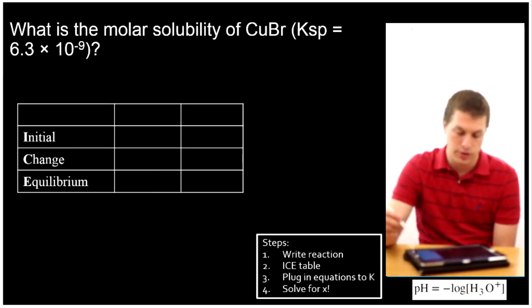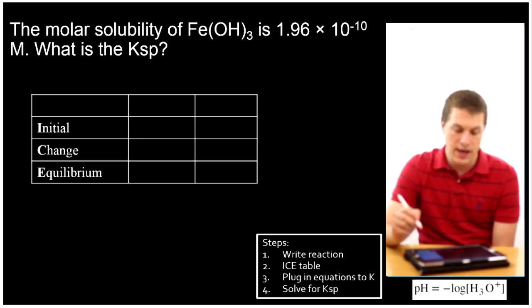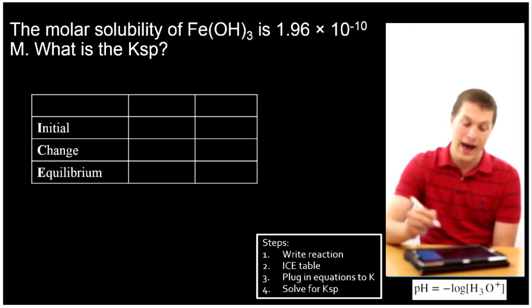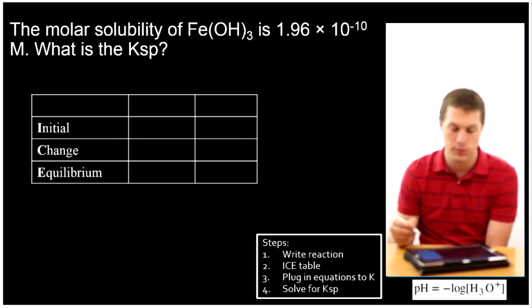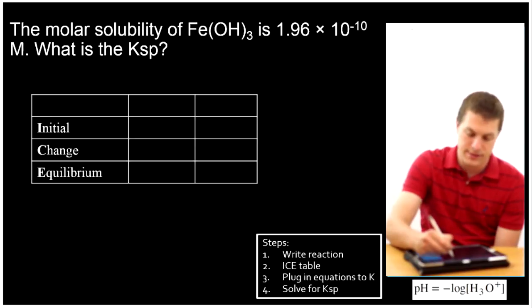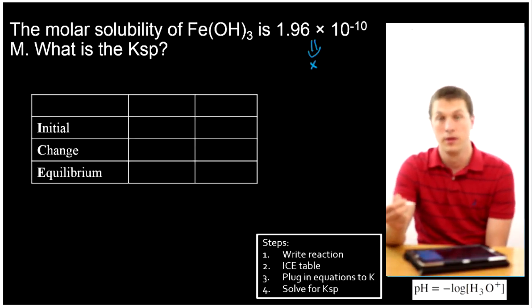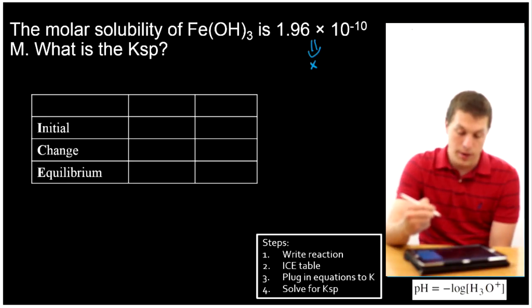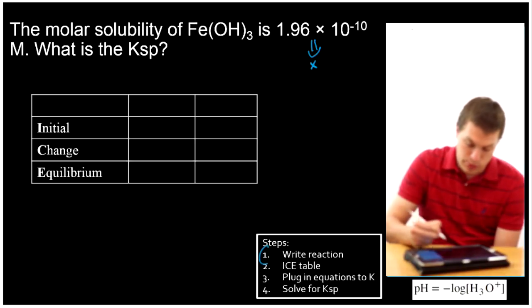All right, last problem, and now we're going to go the other direction. In this case, we get the molar solubility, and we're asked for the KSP. So it says the molar solubility of iron hydroxide is 1.96 times 10 to the minus 10 molar. What is the KSP? So basically, this is just telling us what X equals when we make our ICE table, and the steps for this problem are pretty much the same.